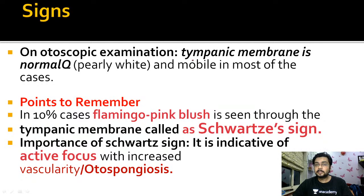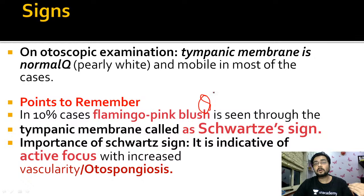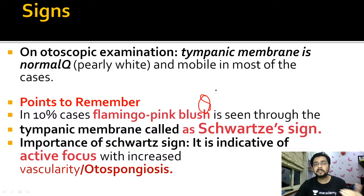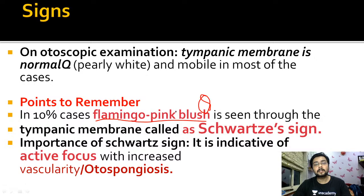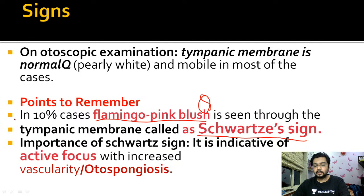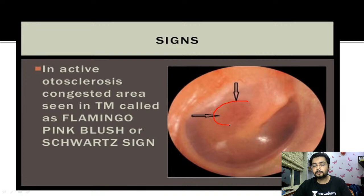Moving to otoscopic examination: one finding is that the tympanic membrane was intact. Another important examination finding for NBE is the flamingo pink sign. While doing the otoscopic examination, you have to see whether a flamingo pink sign is present or not. This flamingo pink sign, also known as Schwartz sign, represents increased vascularity seen in the tympanic membrane - a congested area also called 'pink blush' or 'flamingo.'